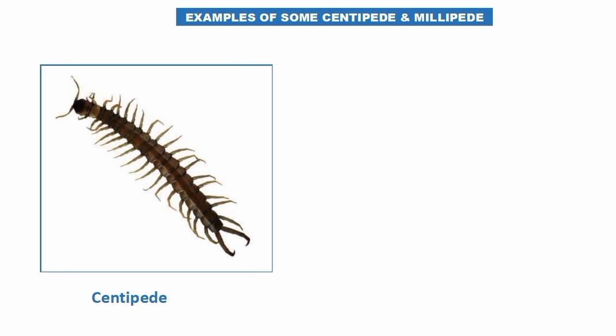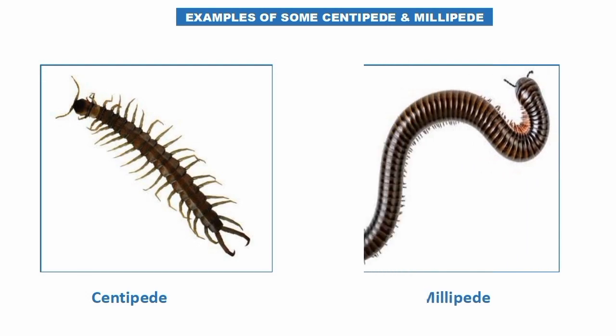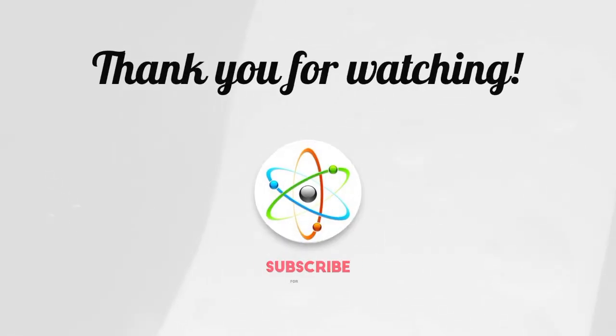As you can see here, this is a centipede — it has a segmented body with a pair of legs per segment. And here the millipede is shown. This image illustrates some key differences between centipedes and millipedes, which will be covered in detail in our next video.